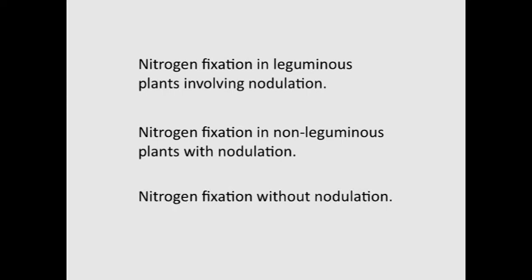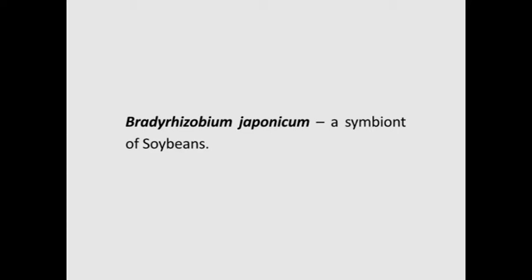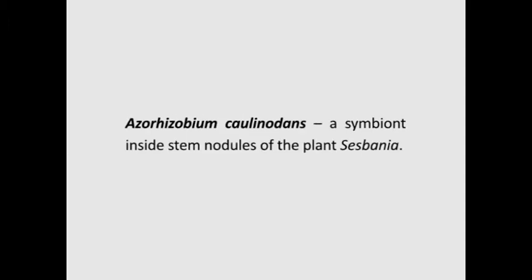Nitrogen fixation in leguminous plants involving nodulation is carried out by the bacterium Rhizobium in the root nodules of leguminous plants. Although Rhizobium also lives freely in the soil, it can fix nitrogen only when inside root nodules. Nitrogen-fixing bacteria in nodules are grouped by host specificity: Rhizobium species such as R. leguminosarum of peas, R. meliloti of lucerne, R. trifolii of clover, R. phaseoli of beans; Bradyrhizobium japonicum, a symbiont of soybeans; and Azorhizobium caulinodans in stem nodules of Sesbania.